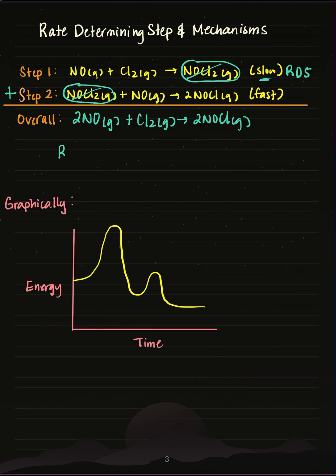We can also use this information to write a rate law. So we're going to say that rate equals K times the concentration of NO times the concentration of Cl2. My rate law will always match my slow step, or rate-determining step, in this case step 1.